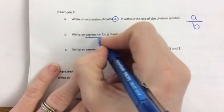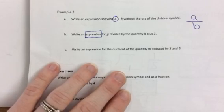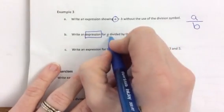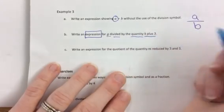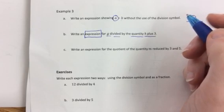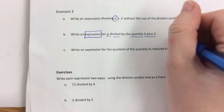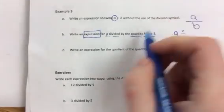Part b, we have to write an expression. So what's an expression? It's a sentence that does not have an equal sign. For g divided by the quantity h plus 3. So, we have two operations going on. g divided